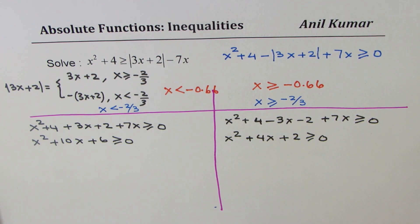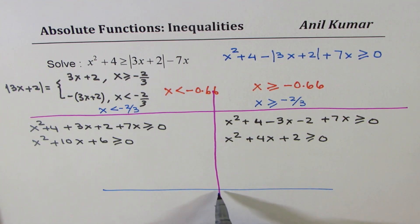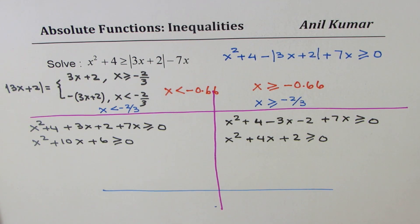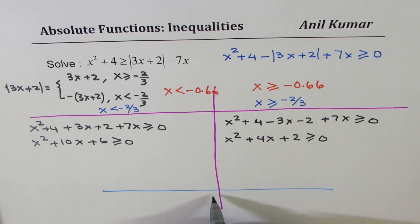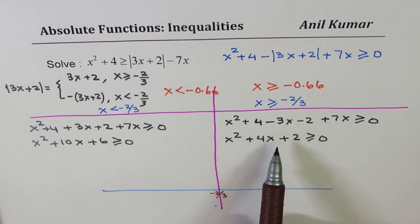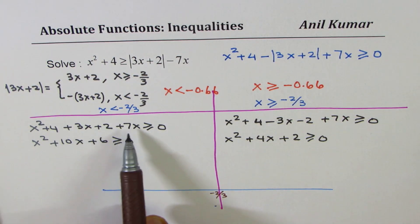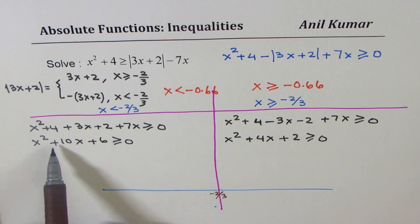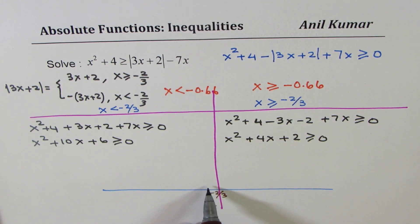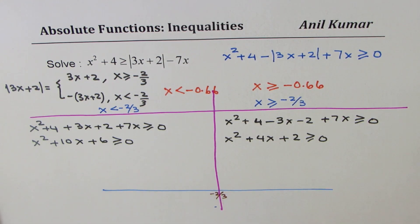Now we need to find the roots of these quadratic equations. The idea is to find the two roots, sketch the parabola on the number line, and determine where each expression is positive. Since the coefficient of x² is positive, the parabola opens upward, so we know where it is greater than or equal to zero.